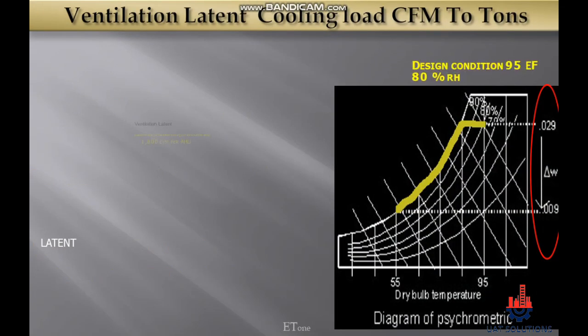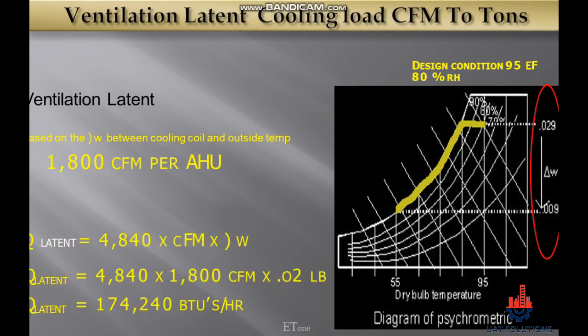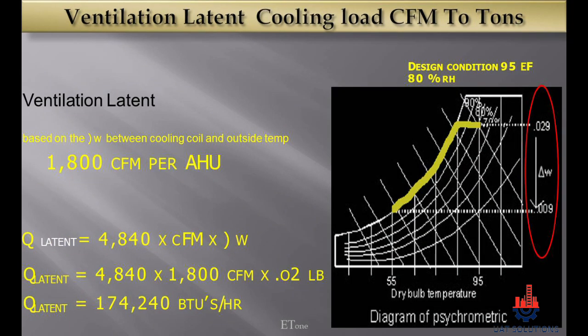The next step is to convert ventilation latent cooling load CFM to tons of refrigeration. The latent cooling load is 1,800 CFM, and the factor value is 4,840. The pound of moisture in the air, measured on-site as per the delta T required, is 0.2. Multiplying 4,840 by 1,800 by 0.2 gives 174,240 BTU per hour for ventilation latent heat.